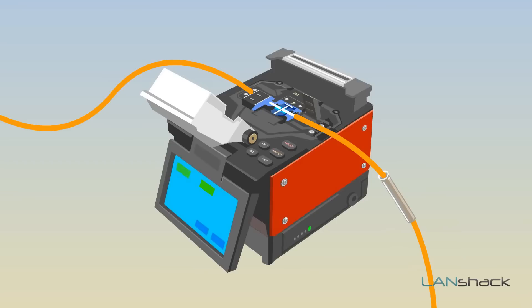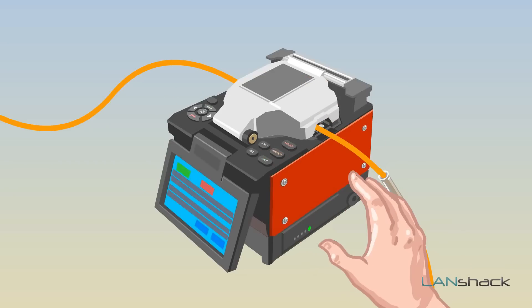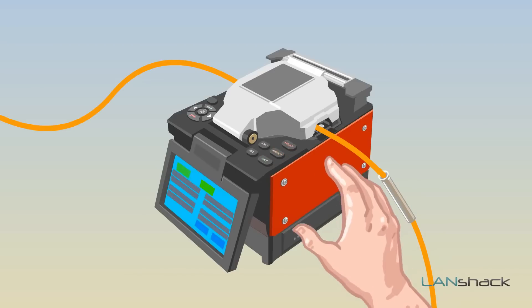Close the lid and check for accuracy. Hit the set button once and if there is a cleave error, repeat the process. If accuracy is achieved, hit the set button again and the splice will be complete.